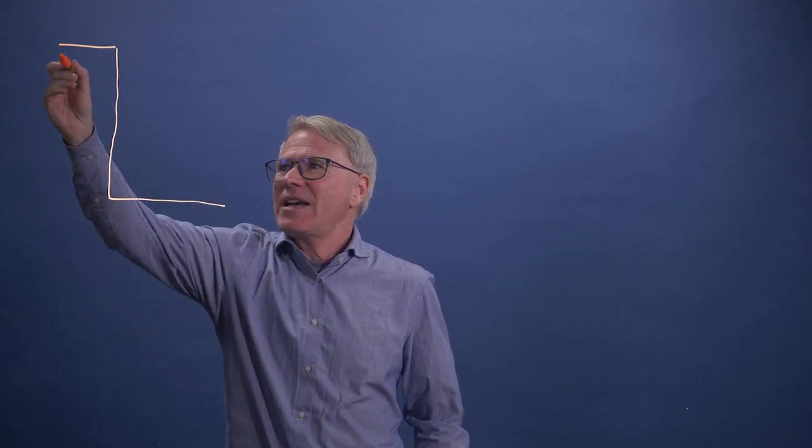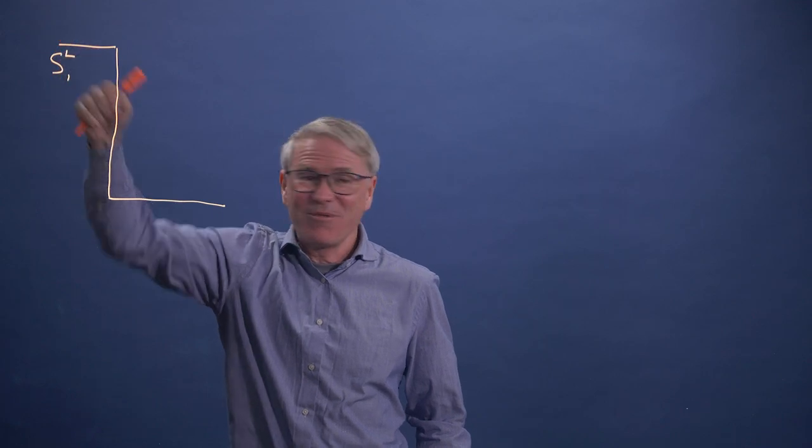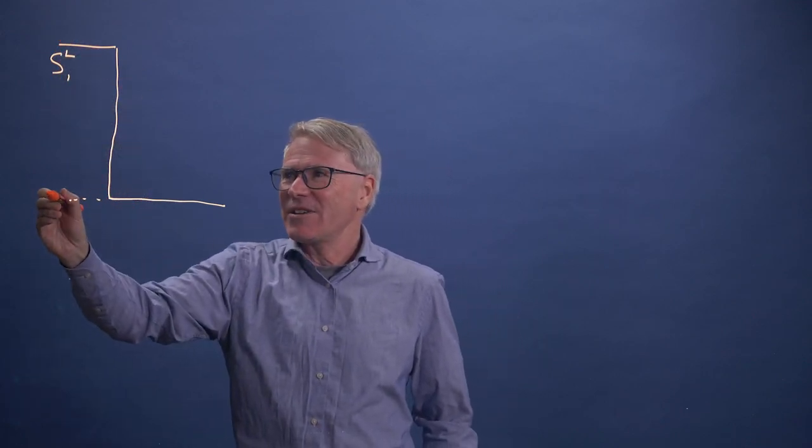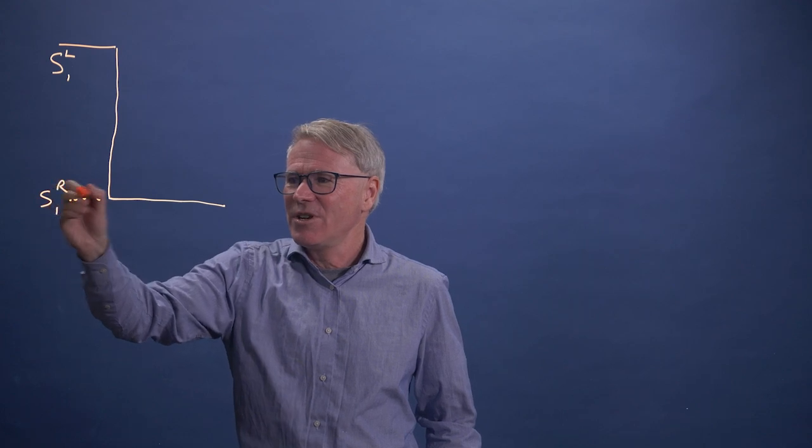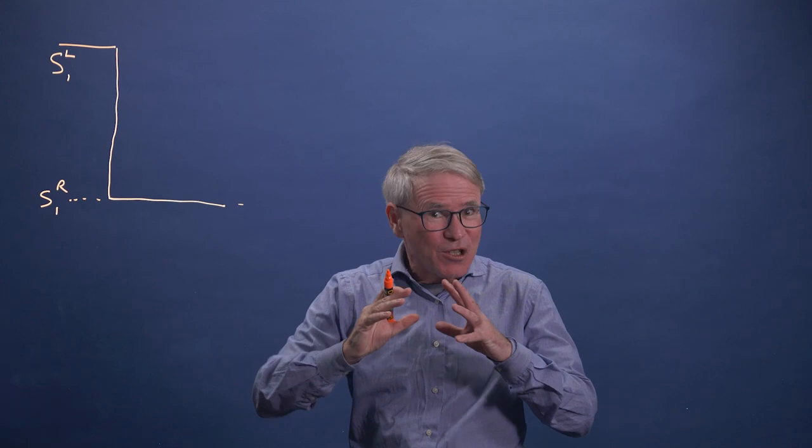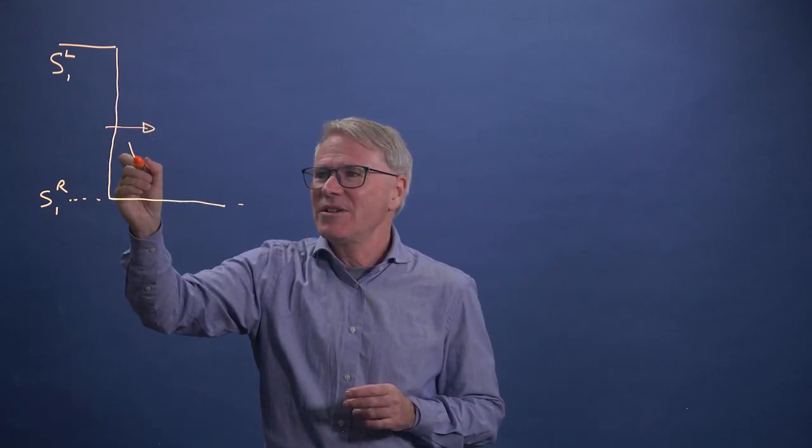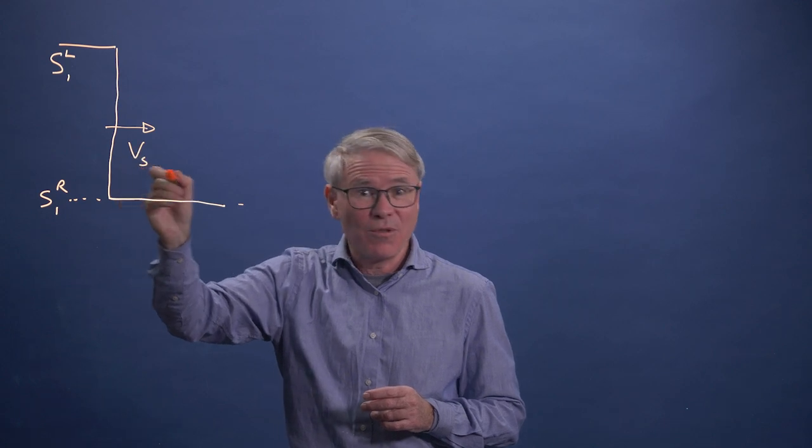The situation we're going to look at is where we have a saturation here to the left, which we call S1 left, and then we have another saturation, a different saturation to the right of the shock. And because we're just talking about something moving, all we need to know is the speed with which this shock moves that we'll call Vs.